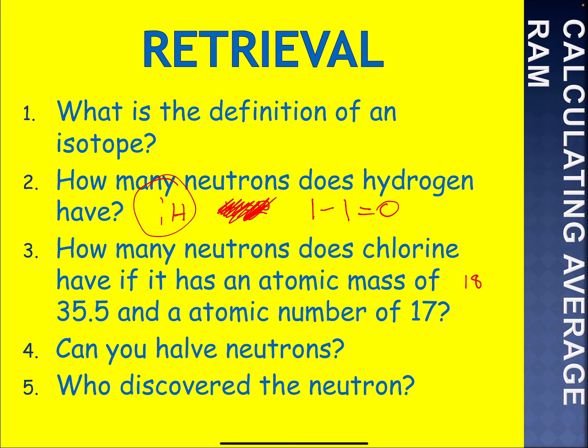Number three: how many neutrons does a chlorine atom have? If it has an atomic mass of 35.5 and an atomic number of 17, well, if it's chlorine-35 then it will have 18 neutrons; if it's chlorine-37, then it will have 20 neutrons.